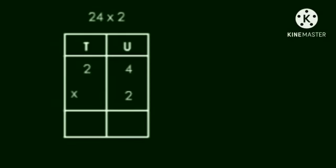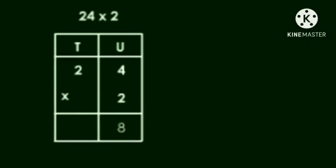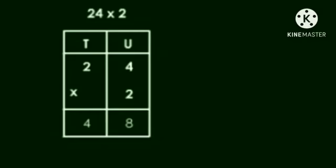And write the numbers and we will start the multiplication from units place. 4 into 2, it is 8. We will write 8 in the units place. And 2 into 2, it is 4. We will write in the 10s place. So, the answer is 48.